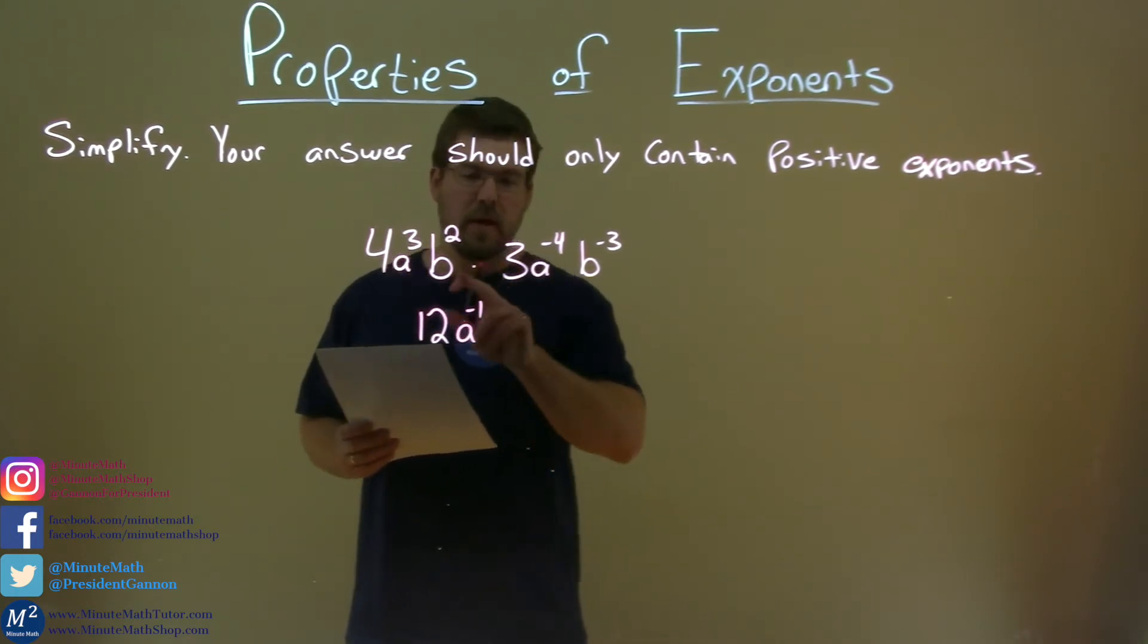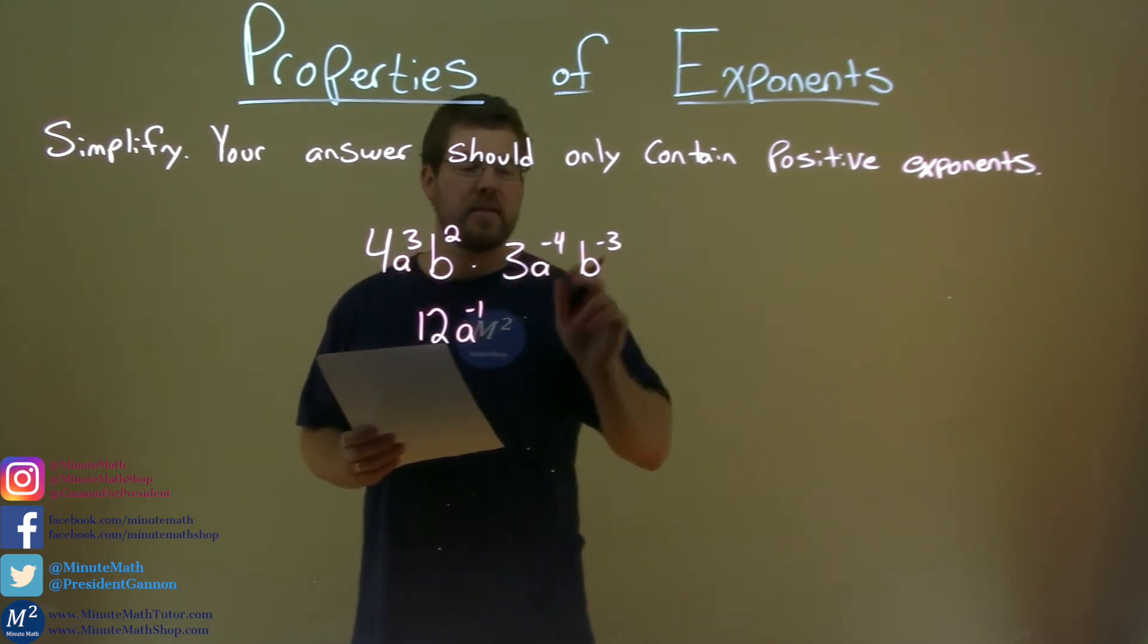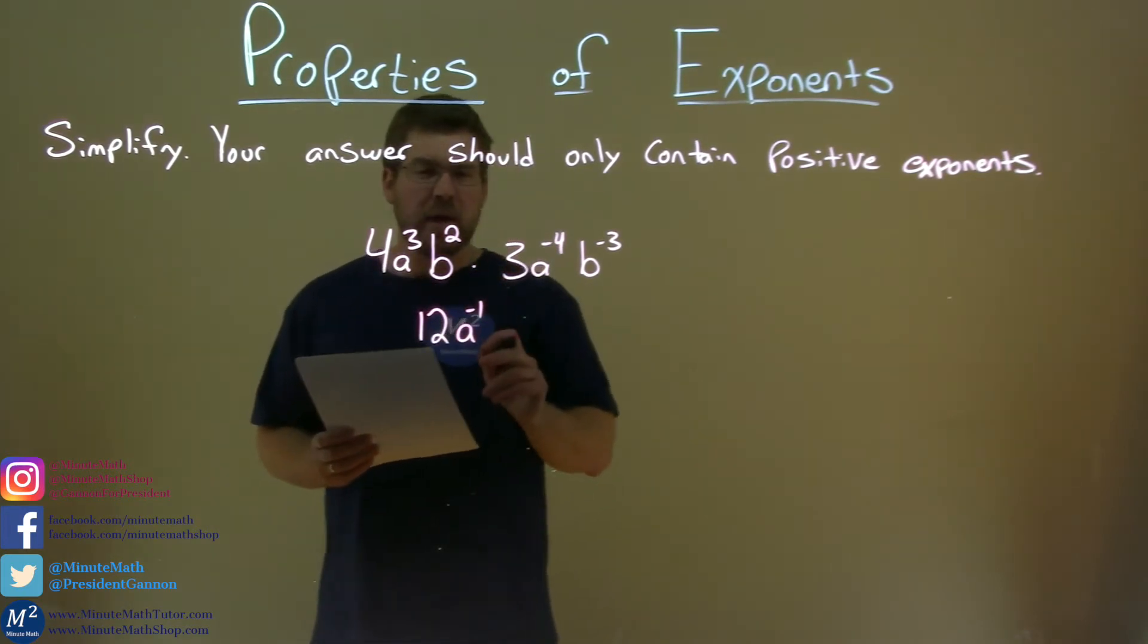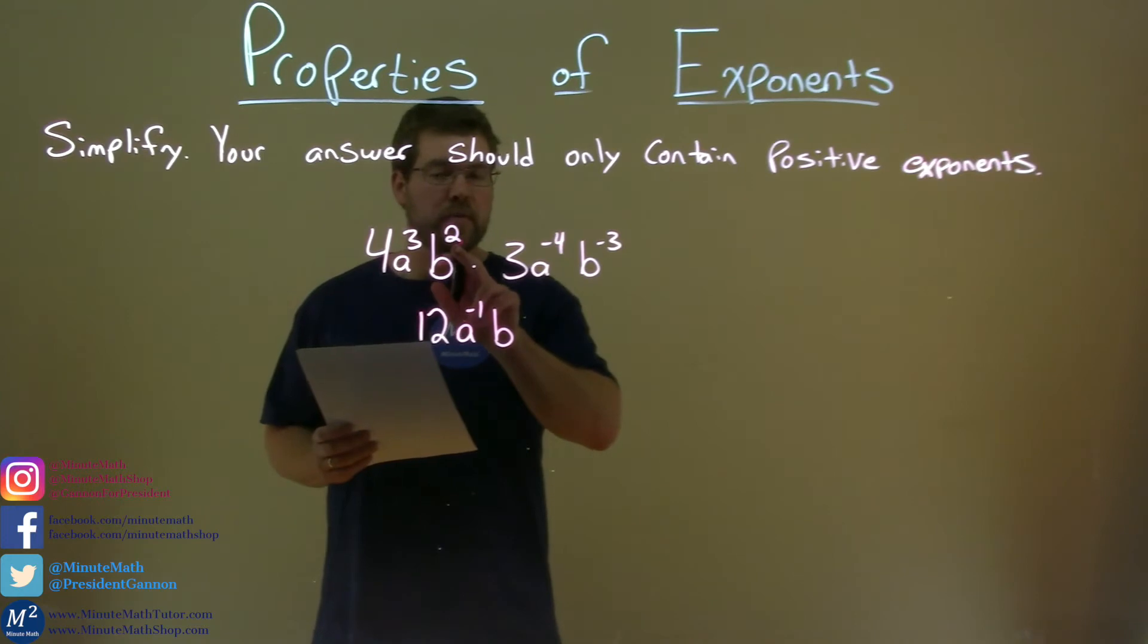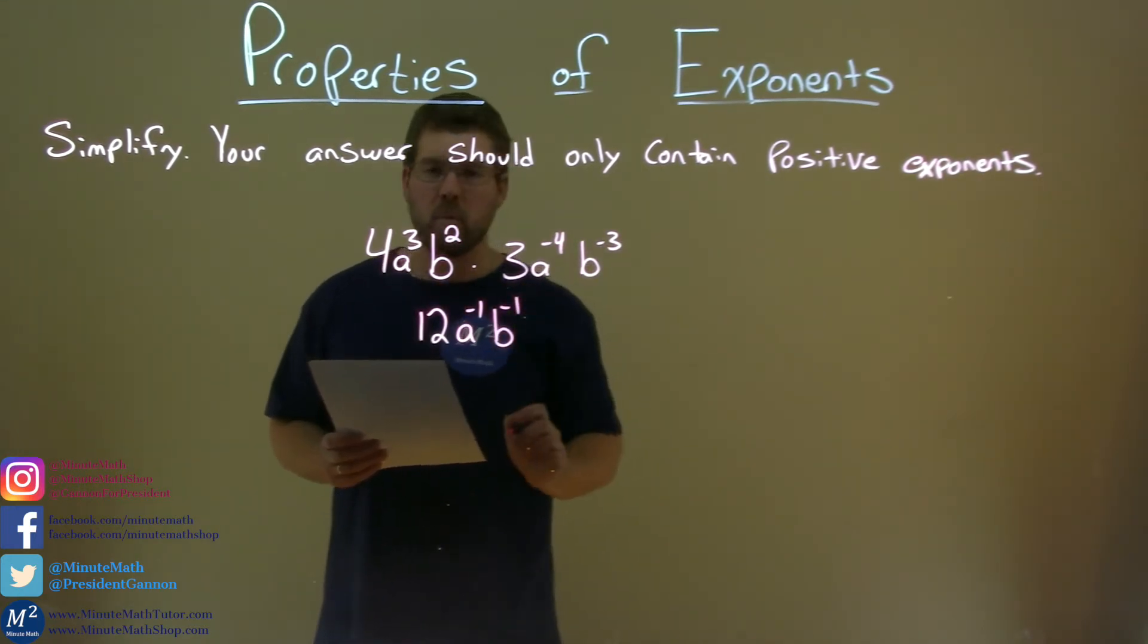Now let's deal with the b's. b² times b⁻³. Again, same rule applies. With base b, we add the exponents. 2 plus negative 3 is negative 1.